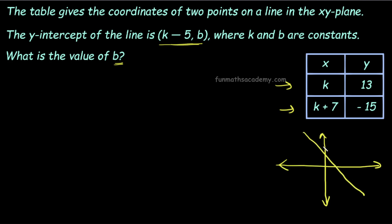Why do we draw a diagram? X value increases and y value decreases. The line is like this. The point is the y-intercept. This point is (k-5, b).